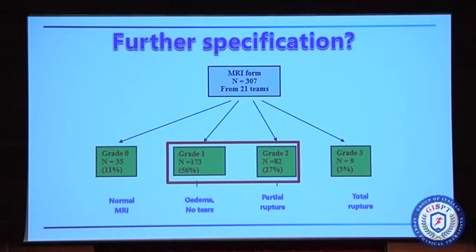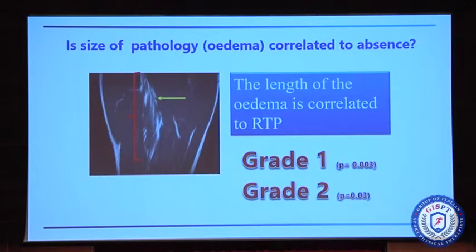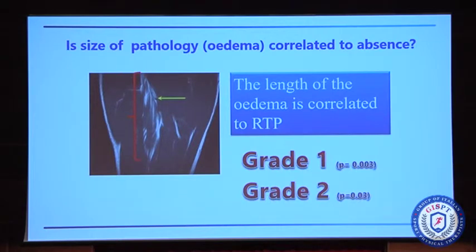We did a further specification, evaluating grade one and grade two injuries — we could not evaluate grade zero because they had no pathology, and we could not use grade three because there were too few. The question was: is the size of the pathology — the edema — correlated to absence? Yes, it is. It's a rather strong correlation for grade one injuries and not so strong for grade two. That has been shown in other studies, so it's not really news.